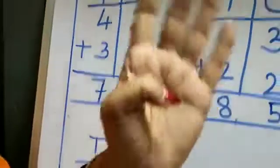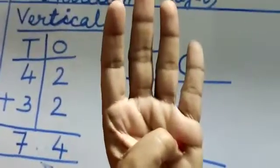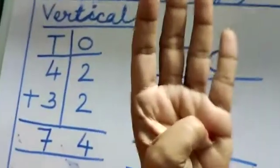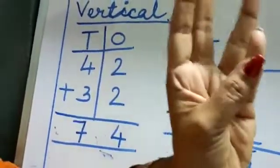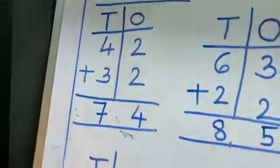5 plus 4. 5 let me keep here. 5 after 5, I have to count 4 numbers. 5, 6, 7, 8, 9. 6, 7, 9.